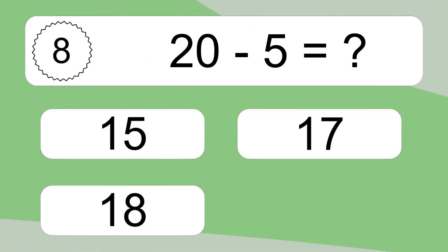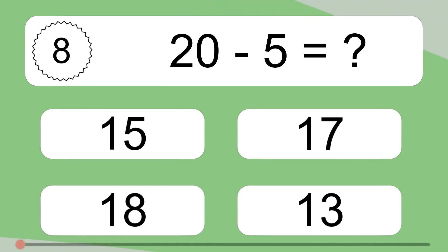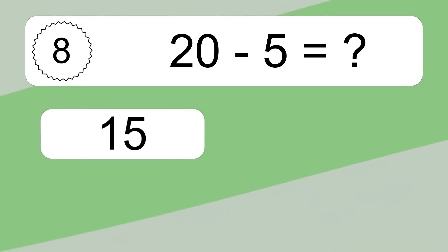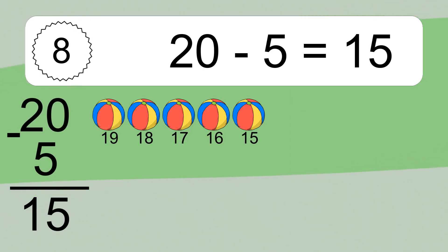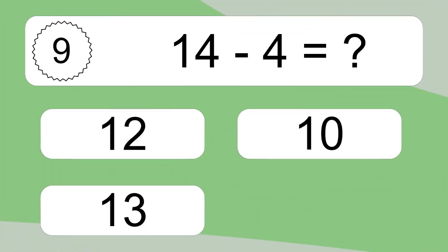20 minus 5 equals what? 20 minus 5 equals 15. Let's count it: 19, 18, 17, 16, 15.